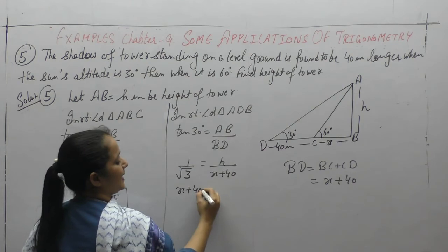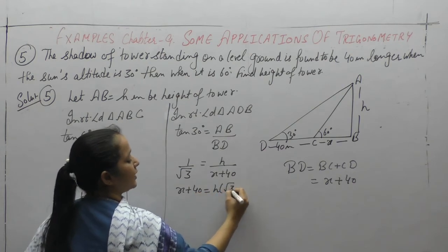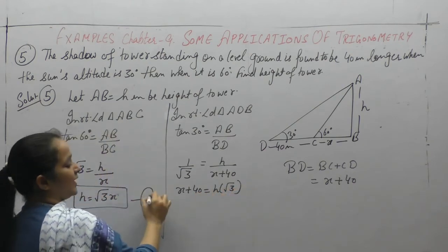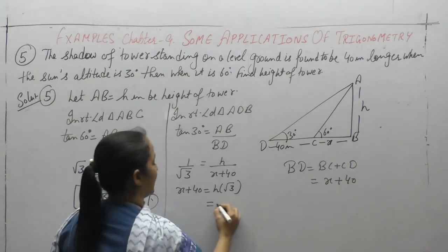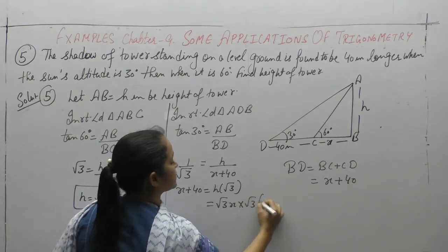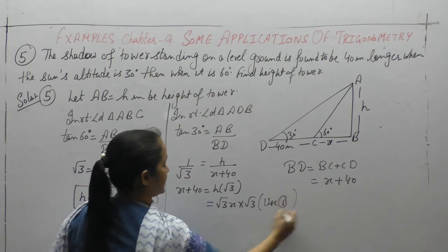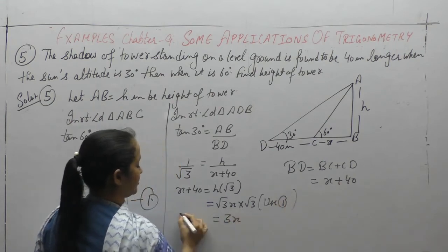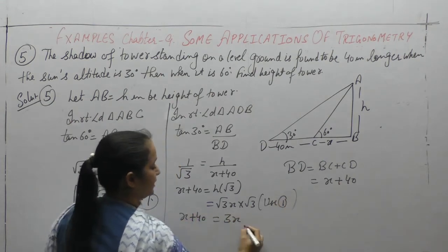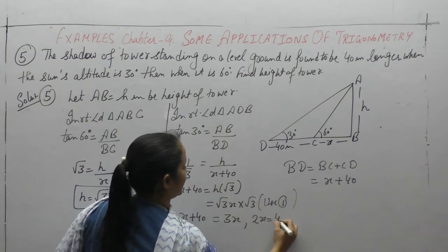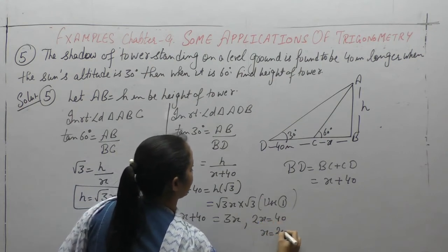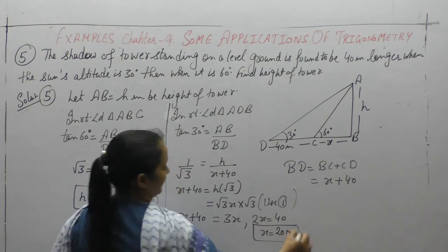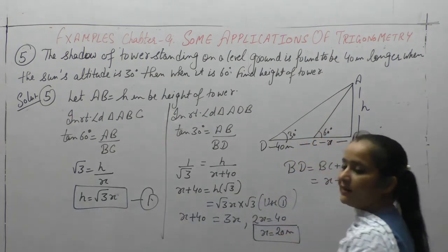Again cross multiply. h into square root of 3. h की value हमारे पास equation 1 में है, use करेंगे. Use equation 1. 3x equals x plus 40. यहां से हमारे पास आ गया, x equals 20 meters. But हमें तो height of the tower find करनी है.